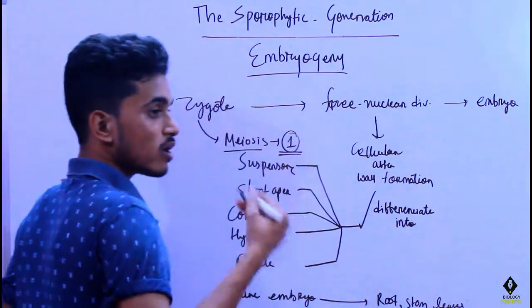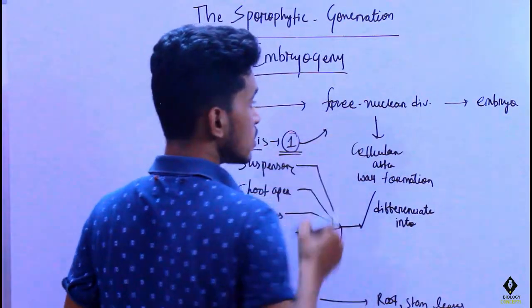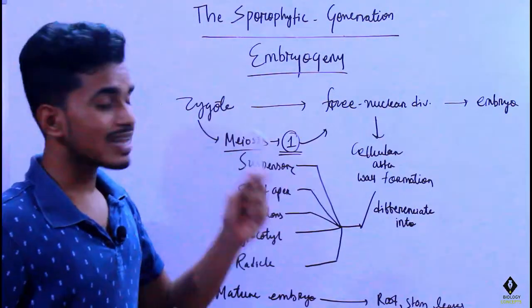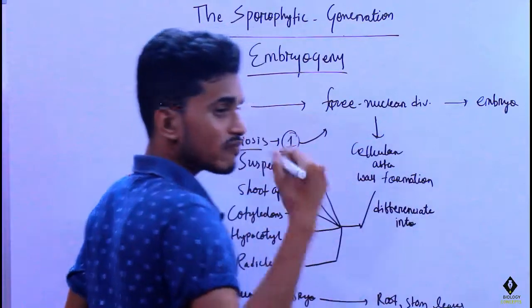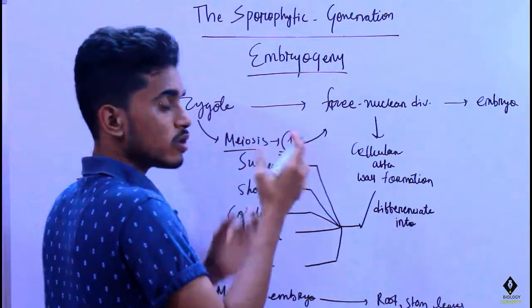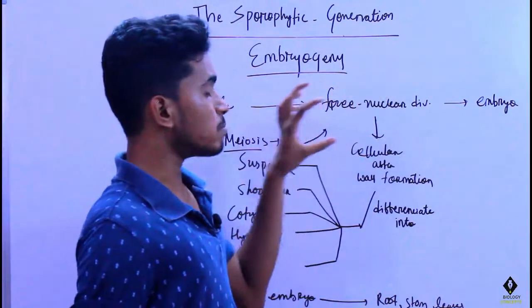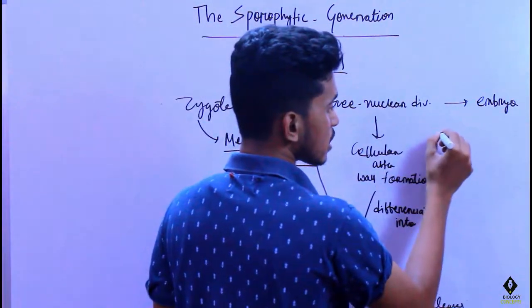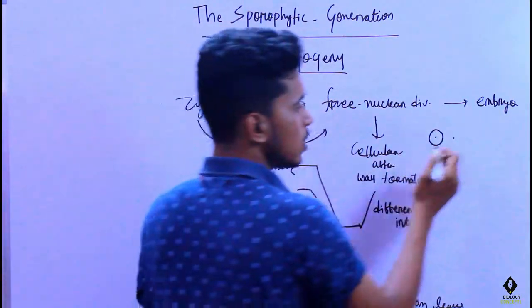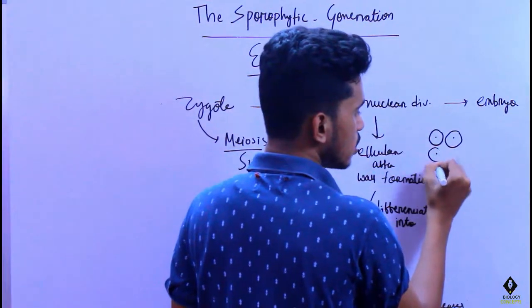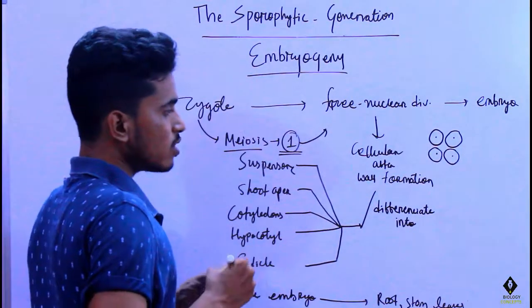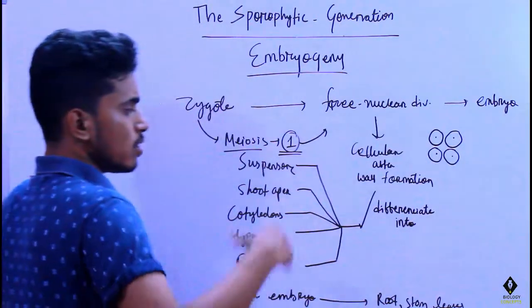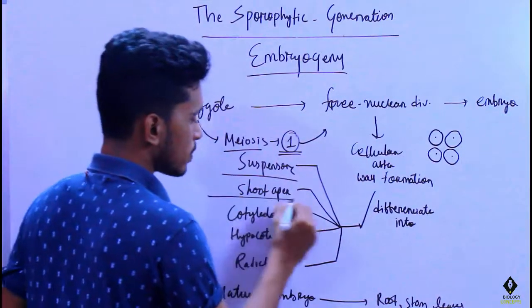That one functional haploid cell undergoes mitosis, also called free nuclear divisions, forming a number of haploid nuclei. Once these nuclear divisions occur, the nuclei grab some cytoplasm and become cellular after wall formation. This cellular organization then differentiates into the suspensor, shoot apex, cotyledon, hypocotyl, and radicle — the components of a mature embryo.